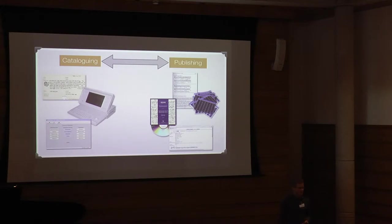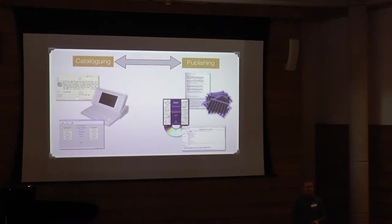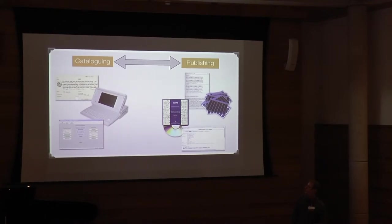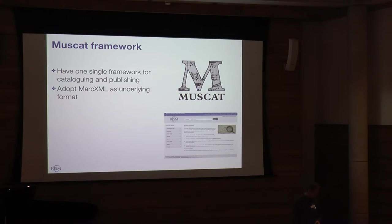The data would go in one direction, and that was the way to make data available to musicologists. About 10 years ago we started to look at options where things could be done in one place — where you could do the cataloging and in an online environment make the data available to users. That took the form of a project which we call Muscat.